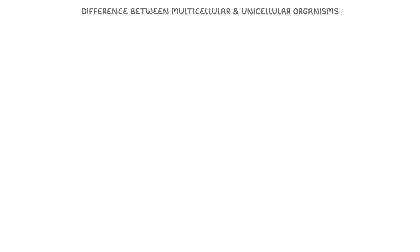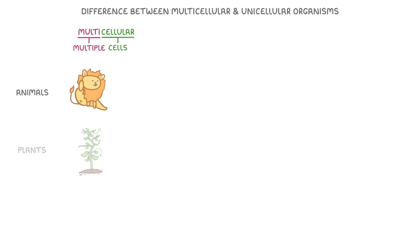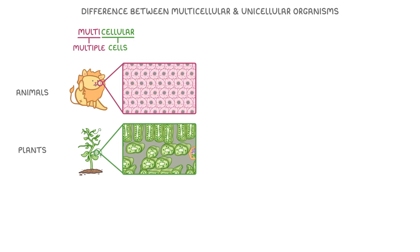Let's begin by looking at the difference between multicellular and unicellular organisms. The term multicellular just means multiple cells, so multicellular organisms are organisms that are made up of multiple cells. This means that both animals and plants are considered multicellular, because they're each made up of loads and loads of cells. On the other hand, unicellular literally means one cell, so unicellular organisms are those that only consist of a single cell.